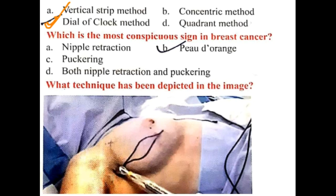What is the most conspicuous sign of breast cancer? It is peau d'orange appearance, because peau d'orange indicates invasion of the tumor to the subdermal lymphatics. This is the most conspicuous sign of breast cancer.